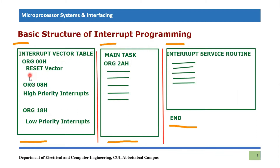In interrupt programming we have two other parts available. One part is known as the interrupt vector table, which includes the reset vector, higher priority interrupt addresses, and low priority interrupt addresses. The reset vector means whenever you turn on the microcontroller IC, it will open at that specific area — that is why it is called the restart or reset vector. You will be at location 0x00, but normally we write at 'org 0x2A', meaning we are writing in program memory at address 0x2A.